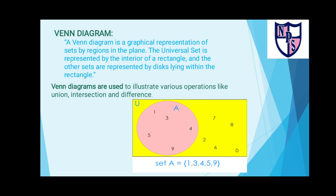Okay students, before starting the lecture we must have some idea about Venn diagram. A Venn diagram is a graphical representation of sets. The universal set is represented by the interior of a rectangle and the other sets are represented by discs lying within the rectangle.